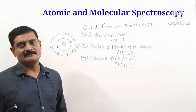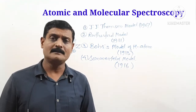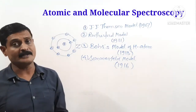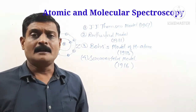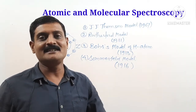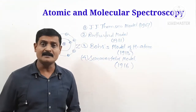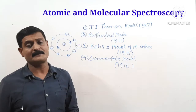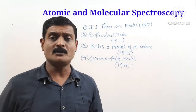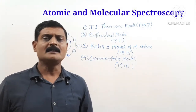JJ Thomson discovered the electron first and then suggested the first atomic model, known as the JJ Thomson model of the atom. In 1907, this model is also known as the plum pudding model. It consists of negatively charged electrons and positively charged particles in equal numbers, so the atom is electrically neutral.